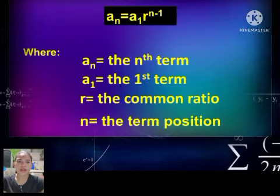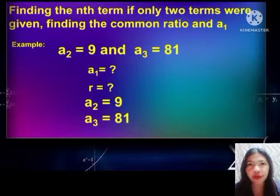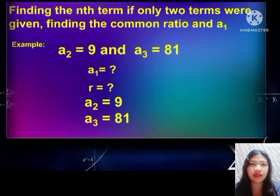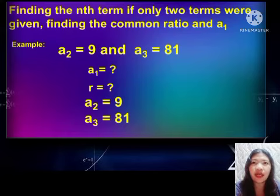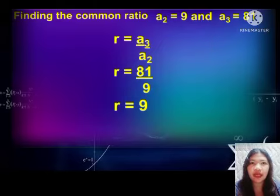Let's try another example — finding the nth term if only two terms were given, finding the common ratio (symbol: small r), and finding a sub 1. We have two terms given: a sub 2 equals 9 and a sub 3 equals 81. In order to find the first term or a sub 1, we will determine the common ratio first, then use the formula for finding a sub 1.